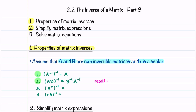Note that the order of the multiplication reverses. Recall that this is similar to when we learned what AB transpose was equal to — this was equal to B transpose, A transpose. So AB inverse is just like this. Our third property tells us that the inverse of the transpose is the transpose of A inverse. Our last property tells us that the inverse of the scalar multiple R times A is equal to 1 over R, since R is a scalar, times A inverse.